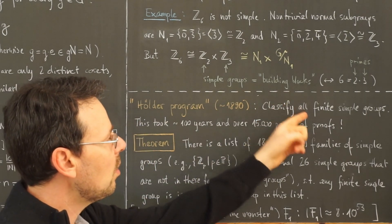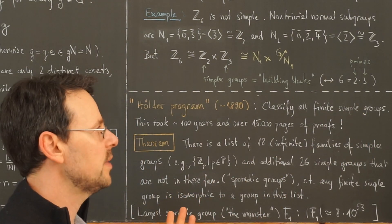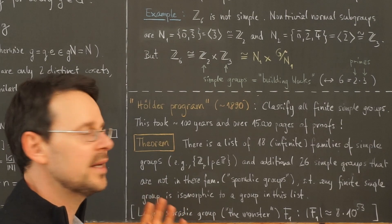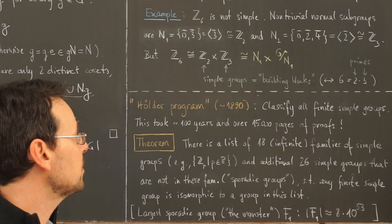Classify all finite simple groups, meaning up to isomorphism, as always, how many different finite simple groups are there. And it turned out this was no easy task.